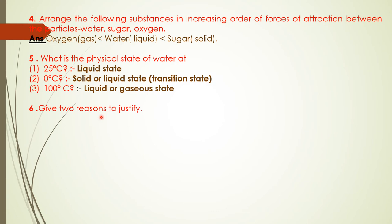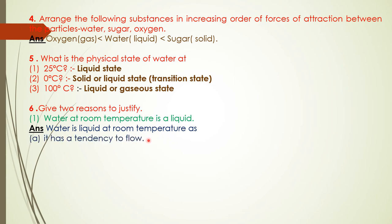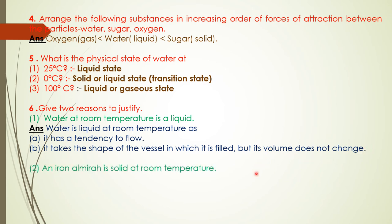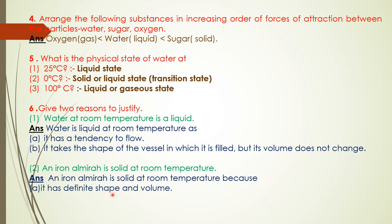Question 6: Give two reasons to justify. First: Water at room temperature is a liquid. Answer: Water is liquid at room temperature as (a) it has a tendency to flow, and (b) it takes the shape of the vessel in which it is filled, but its volume does not change. Second: An iron almirah is solid at room temperature. Answer: An iron almirah is solid at room temperature because (a) it has definite shape and volume, and (b) it is hard and rigid.